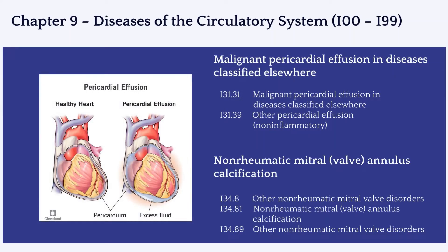The second update for the circulatory system is for pericardial effusion. This condition now has two new codes: I31.31 for malignant pericardial effusion and I31.39 for other specified pericardial effusion. The third set of codes updated for this chapter are for non-rheumatic mitral valve disorders. Code I34.81 is for non-rheumatic mitral valve annulus calcification, and code I34.89 is for other non-rheumatic mitral valve disorders.